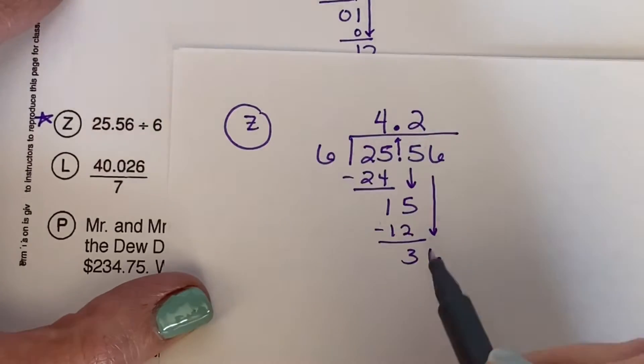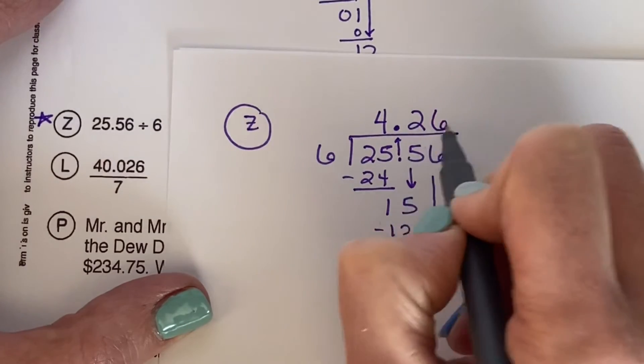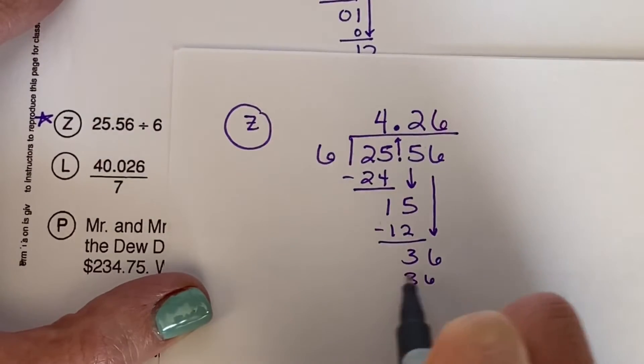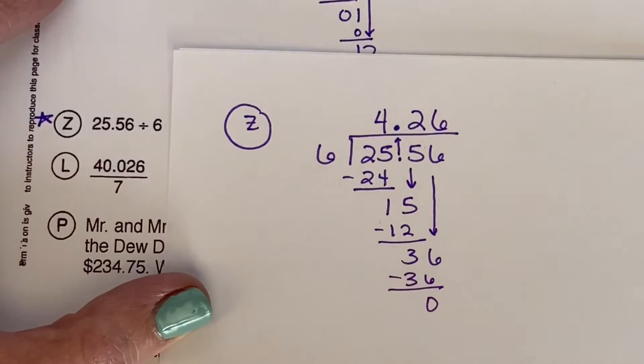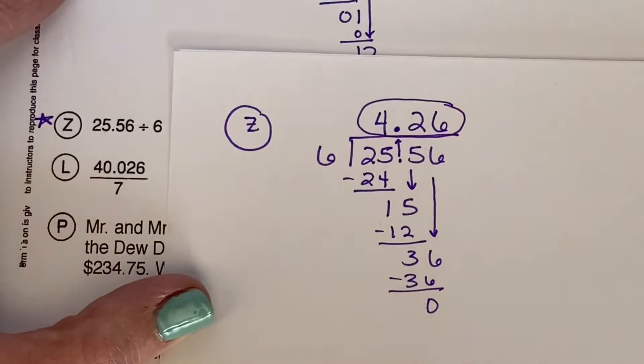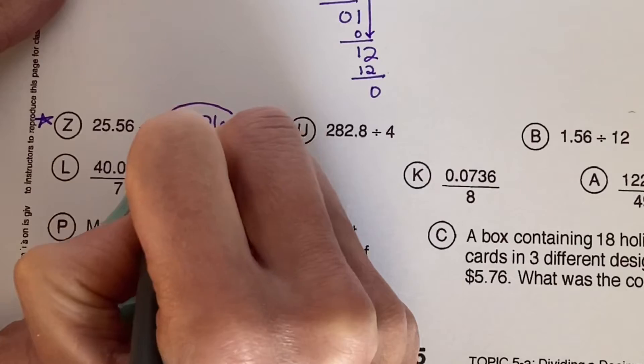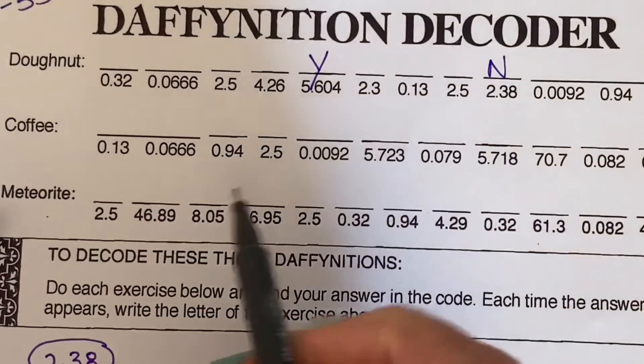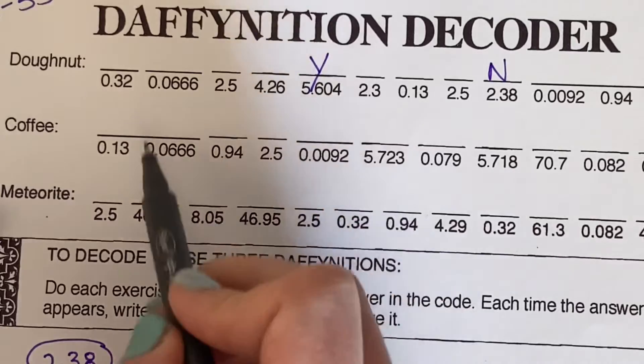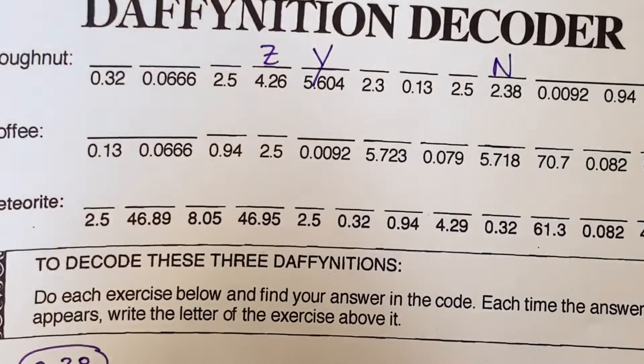How many times does 6 go into 36? 6 times. Bring that straight up. 6 times 6 is 36. Remainder of 0. Our answer is 4.26. All right, 4.26 here. And let's see, where do we find 4.26? Here's my Z. I think that's it for that one.